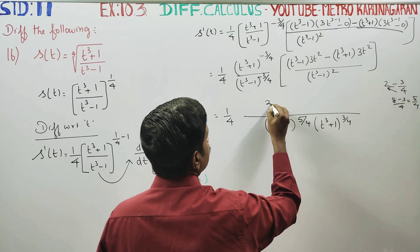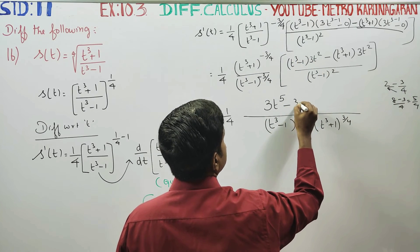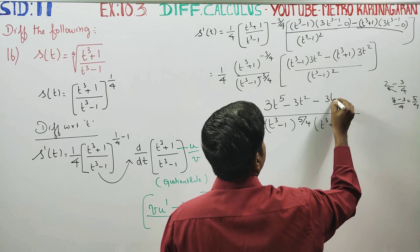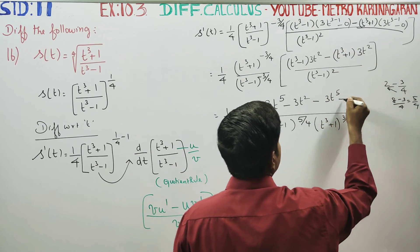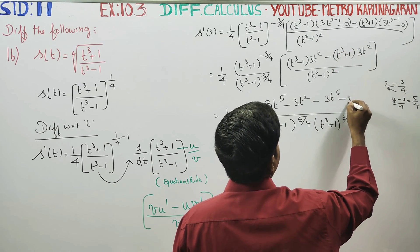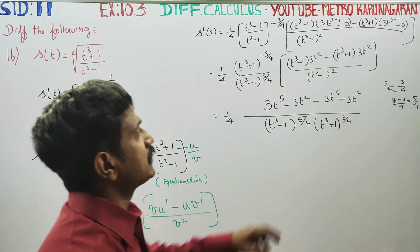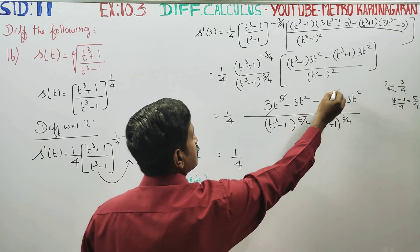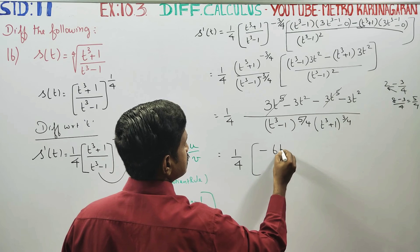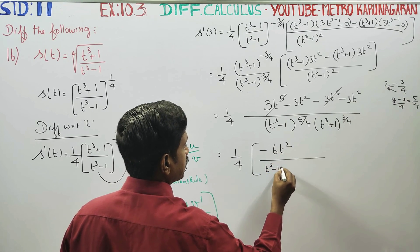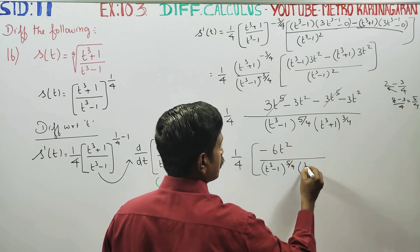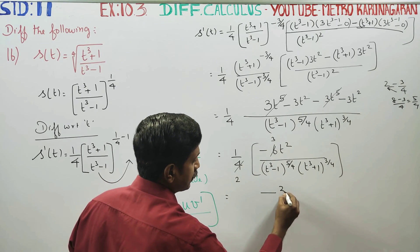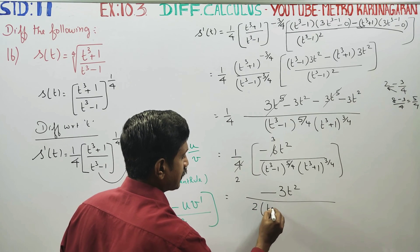Multiplying out the numerator: we get 3t squared from the first term and minus 3t squared from the second term, giving minus 6t squared. Divided by (t cubed minus 1) to the power 5 by 4 times (t cubed plus 1) to the power 3 by 4.